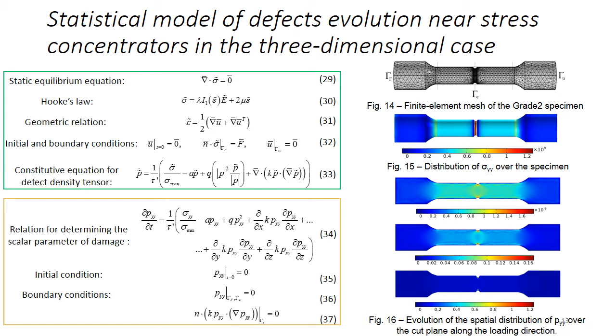Now we will consider analysis of the critical distance theory on the basis of the statistical theory of defect evolution in three-dimensional case. Consider tension of the specimen from grade 2 titanium using the proposed model. Finite element mesh of the specimen is presented in Figure 14. Figures 15 and 16 present distribution of the stress and defect density tensor component in the tension direction.